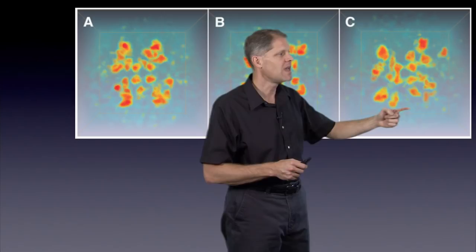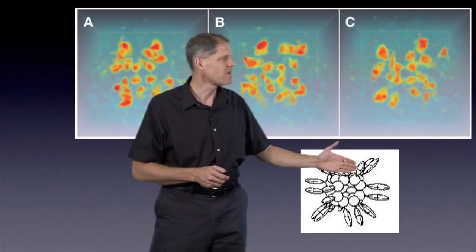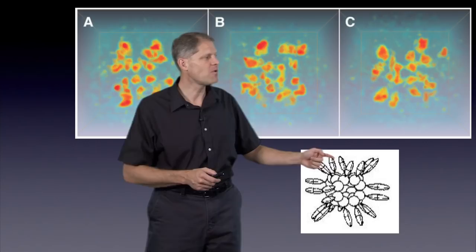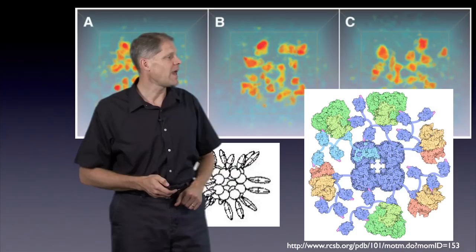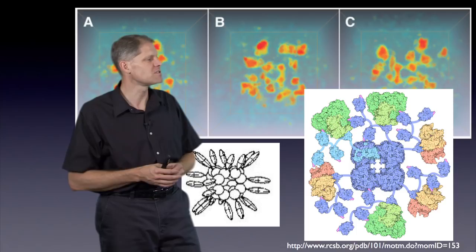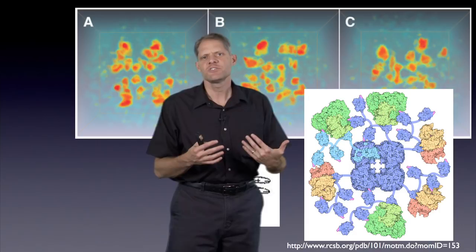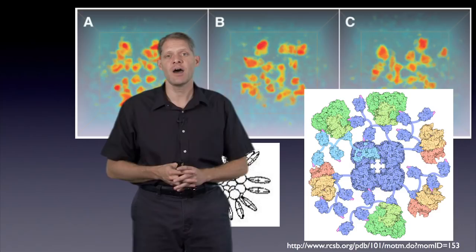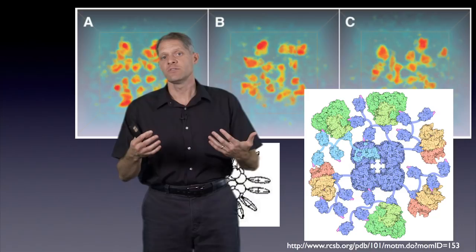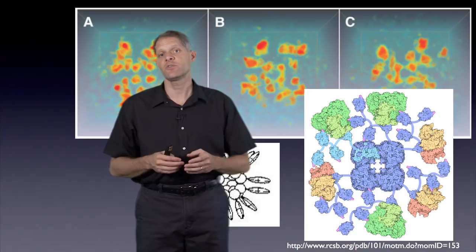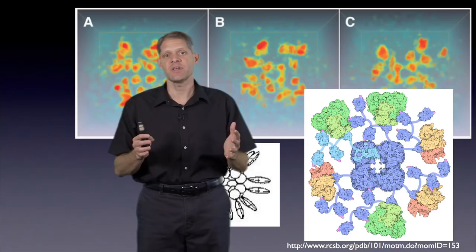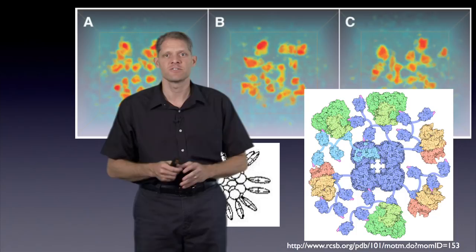The conclusion from this work is that the flexible model is correct: while the E2 core has a regular structure, the E1s and E3s were in a different position for each complex imaged. This is now reflected in the current understanding of PDC structure featured in the PDB Molecule of the Month. This illustrates how tomography can resolve conformational states and reveal architectural information — such as which components are flexibly tethered — that crystal structures of individual subunits cannot provide. Tomography is used to produce 3D reconstructions of unique objects ranging from organelles like the Golgi apparatus to individual macromolecular complexes.